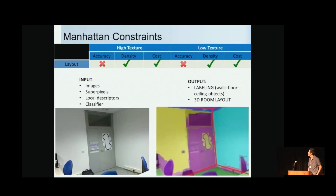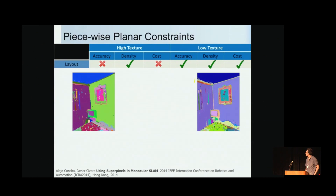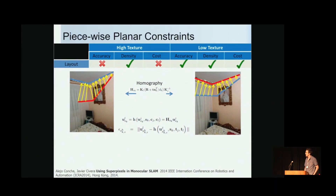For the Manhattan approach we use the layout of a room. Given a sequence of images, the output is a label for every pixel — wall or object — and a 3D estimation of the layout, which serves as our planar constraint in pixels labeled as wall. The piecewise planar approach calculates superpixels between different views, computes the superpixel contour as a descriptor, assumes superpixels lie on a plane using a homography model, and minimizes the contour reprojection error. The variables to optimize are the normal and distance to the origin of the homography.